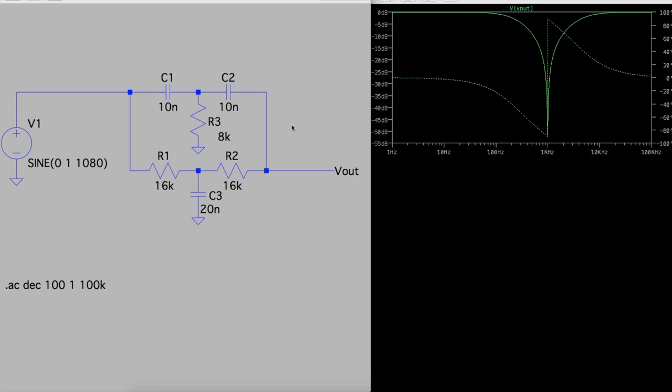And here's the filter in an LTSpice simulation. I have a 20 nano, 10 nano, 10 nano, and then 20. And then the calculated resistor, 16k, 16k, and half of that is 8k. So this is the idealized filter, and here's our phase and frequency response.